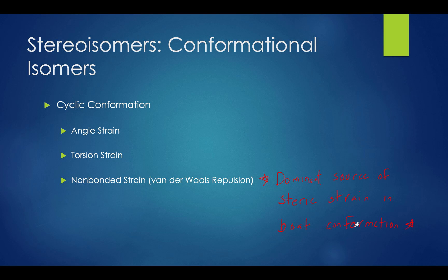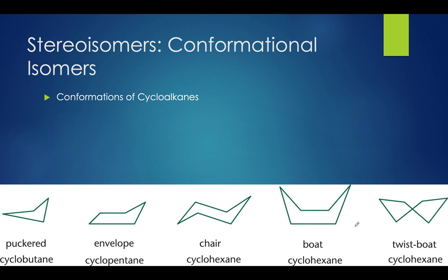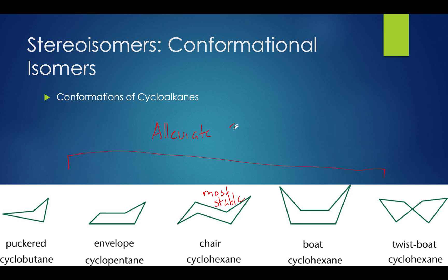Speaking of boat conformations, let's get into that. Simple cycloalkanes each have their own unique conformation, with the exception of cyclohexane which has three. Cyclobutane forms a puckered shape, cyclopentane forms an envelope shape, and cyclohexane has the chair, boat, and twist boat forms. The chair form is the most stable form for cyclohexane. By forming the chair conformation, torsional strain, Van der Waals repulsion, and angle strain are all at an all-time low.